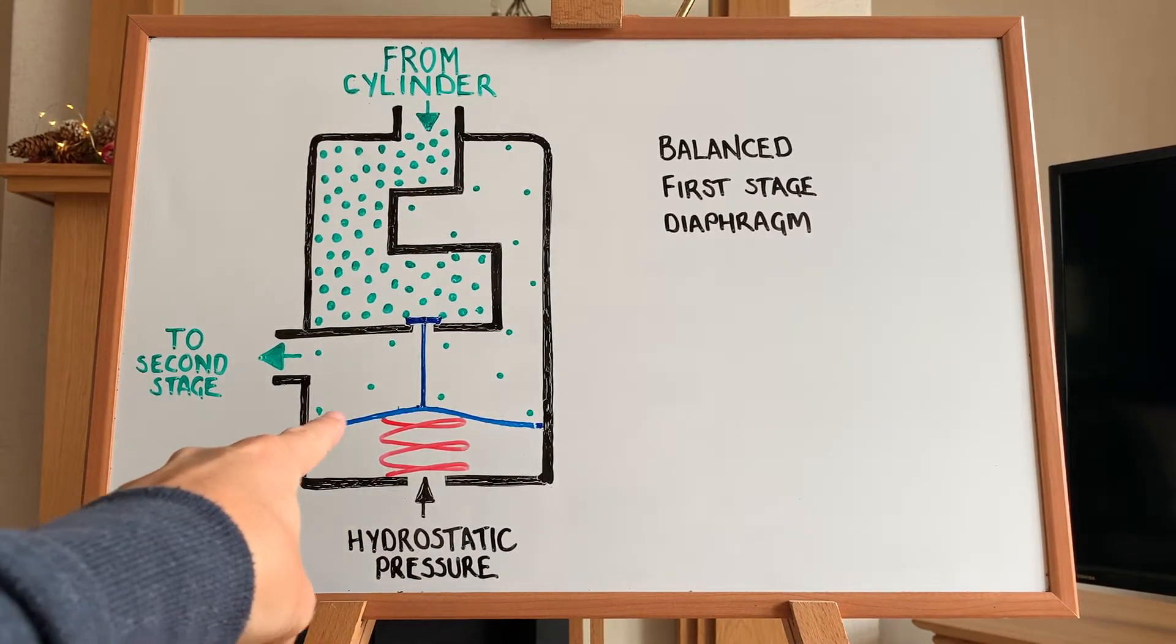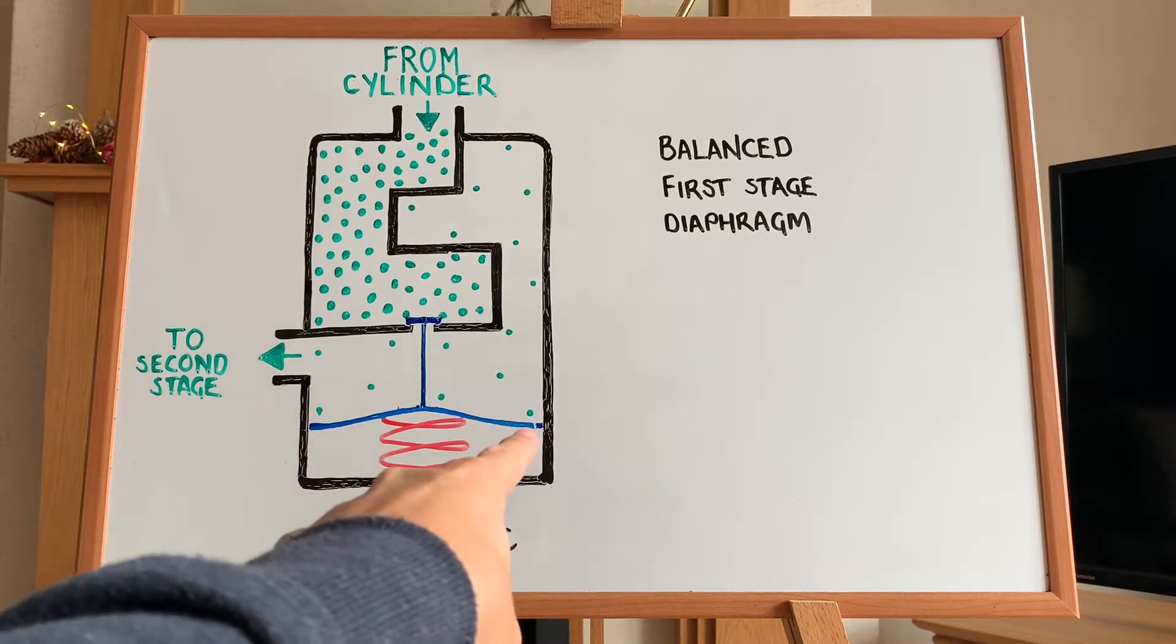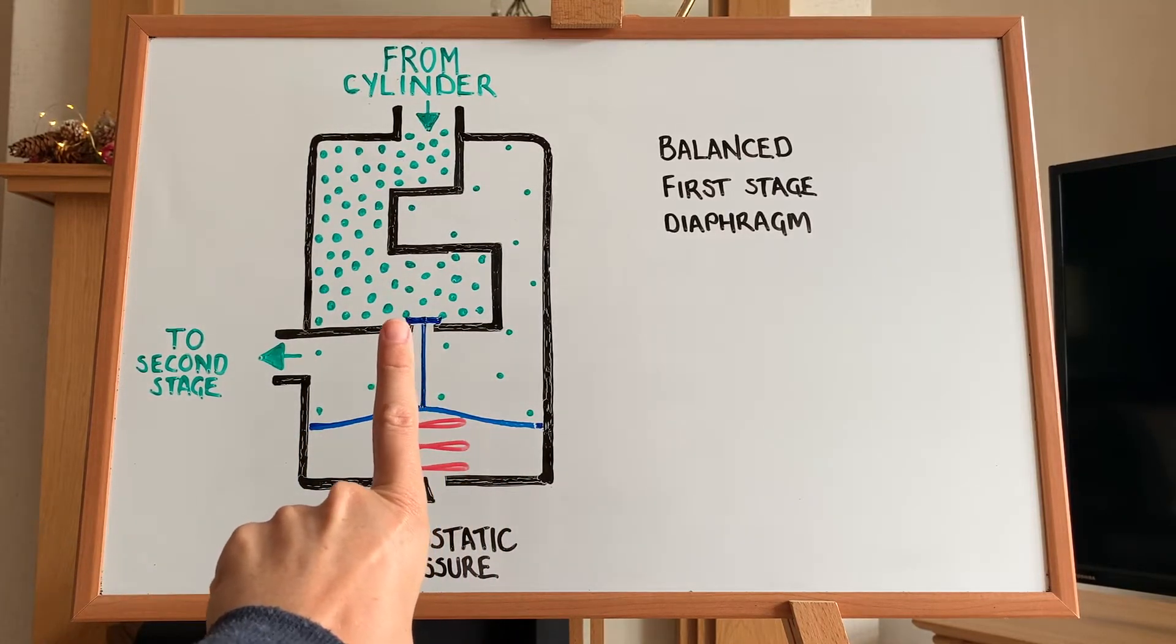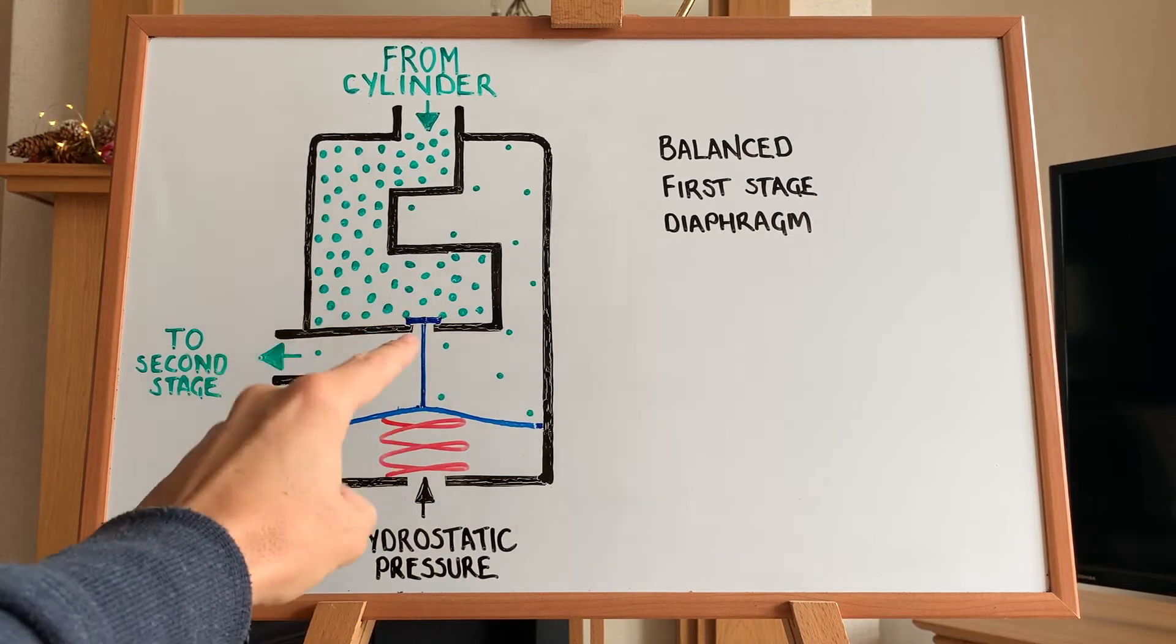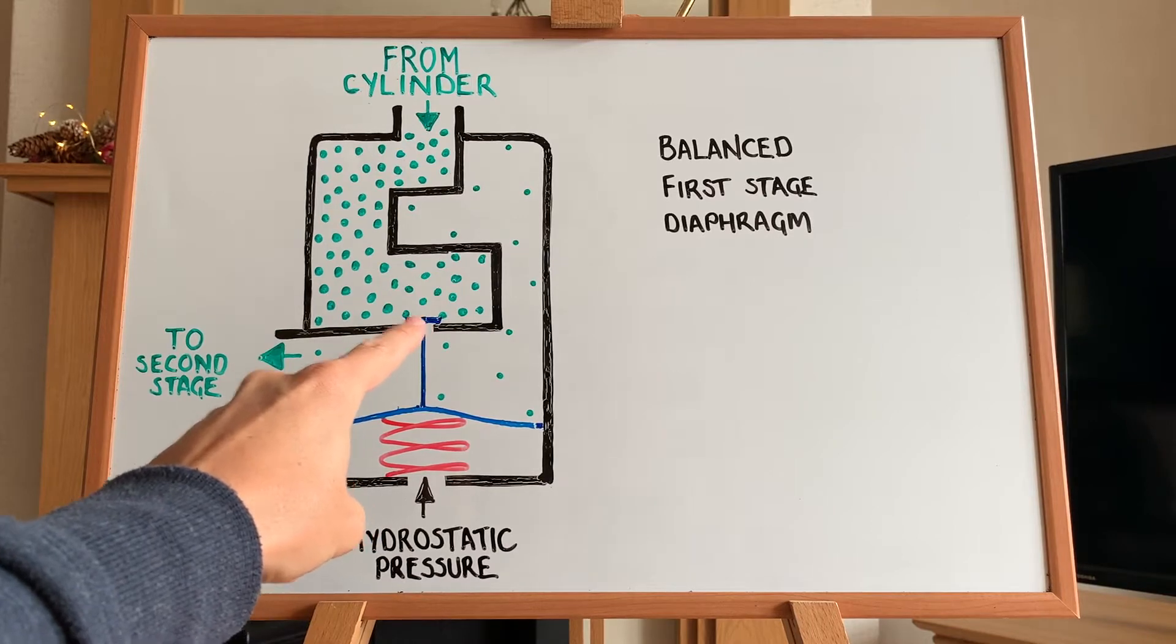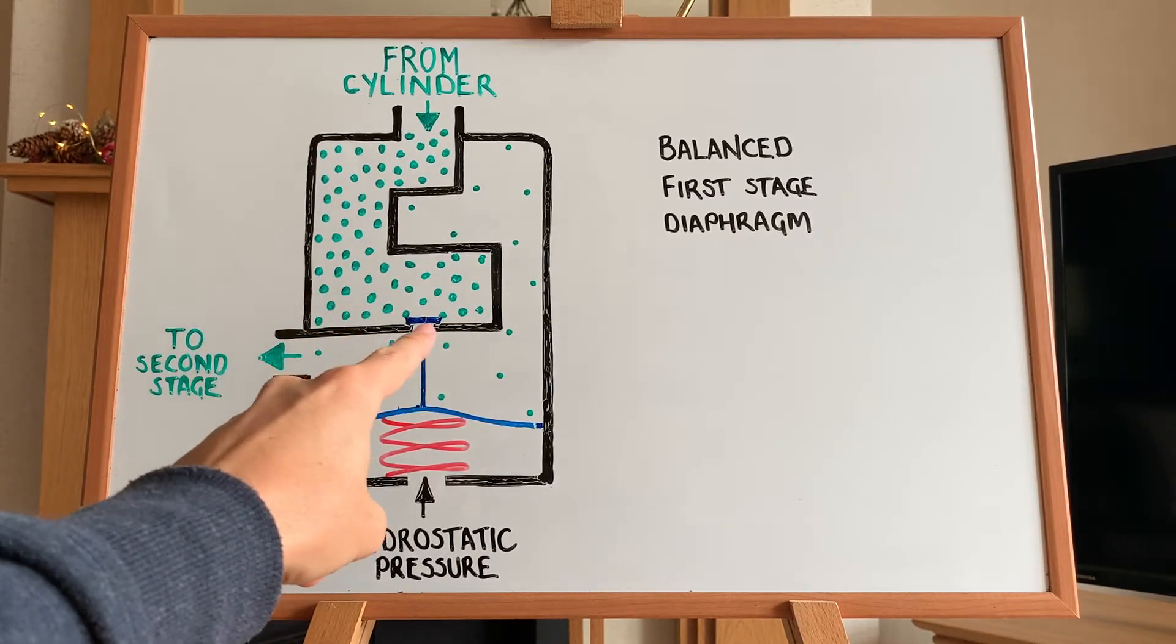On top of that, this is the diaphragm right there. So this kind of blue arc is the diaphragm. And then attached to the top of that diaphragm is a poppet assembly, which is what creates the seal at this orifice right here. So this is the opening between the two chambers, which is sealed.